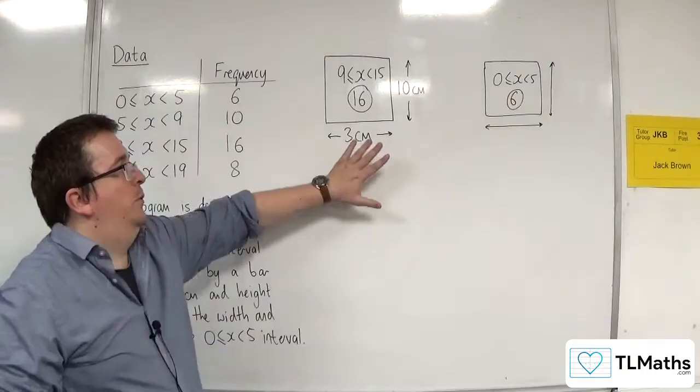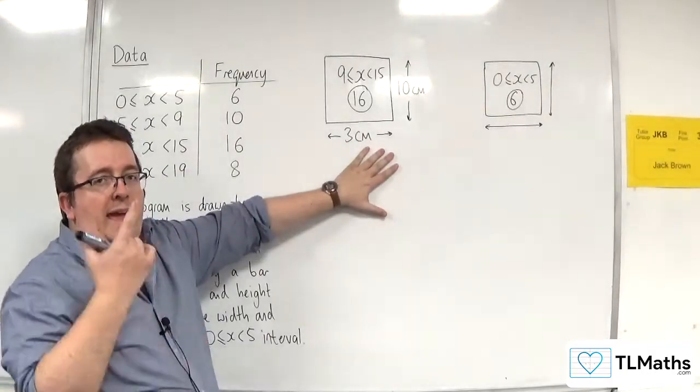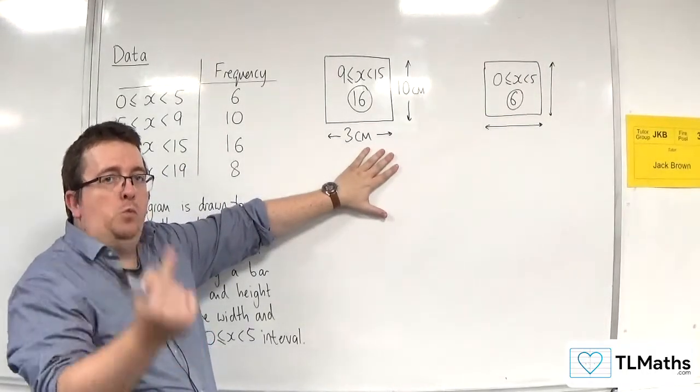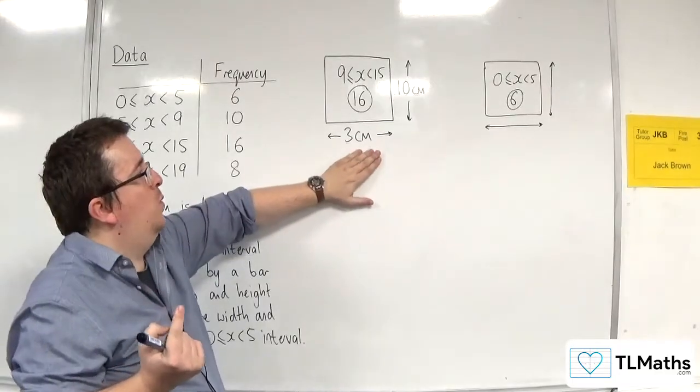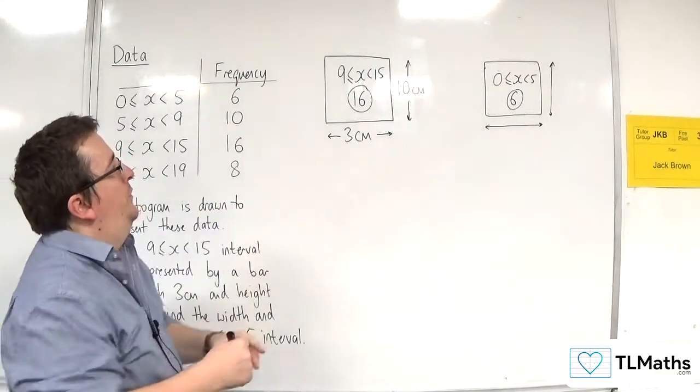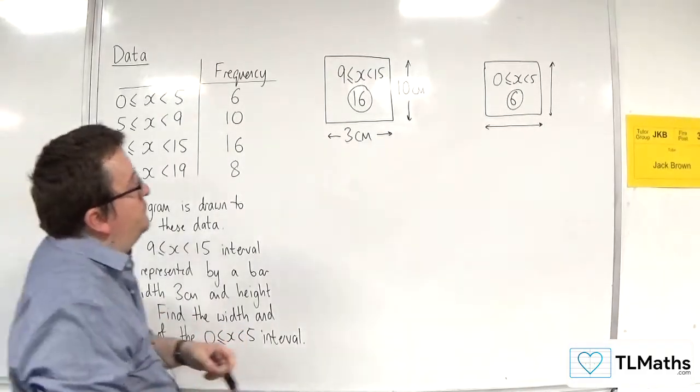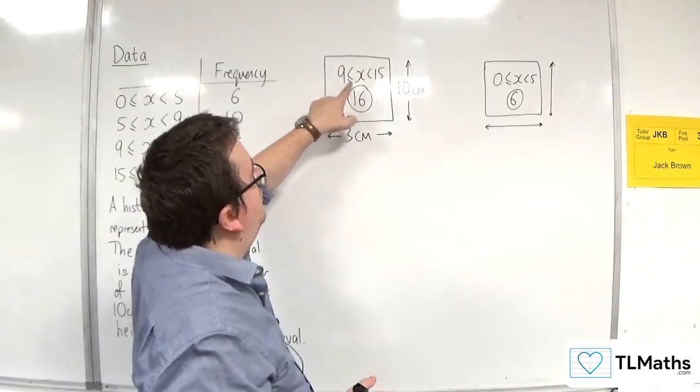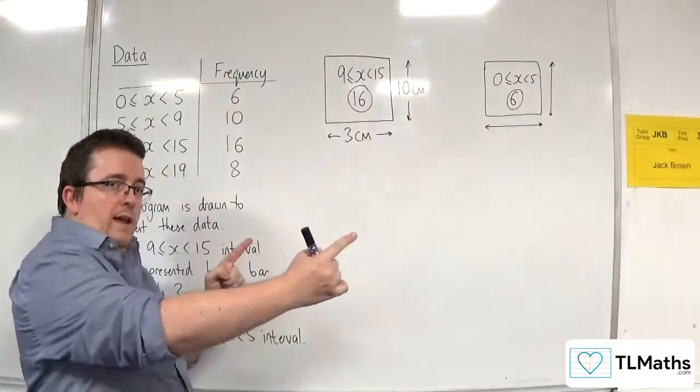Okay, so we should be able to work out the area that represents one person. That's what I want from this block here. So first of all, I know that this is a gap from 9 to 15.